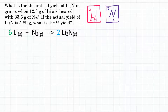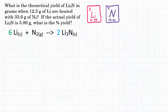The question asks: what is the theoretical yield of Li₃N, lithium nitride, in grams when 12.3 grams of Li are heated with 33.6 grams of N₂? The second part of the question asks: if the actual yield of Li₃N is 5.89 grams, what is the percent yield? So this is a two-part question.